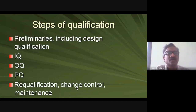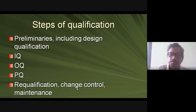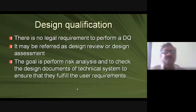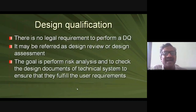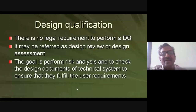DQ is the planned stage done once in a lifetime. First you do IQ, OQ, PQ, then change control for qualification maintenance throughout the equipment's lifetime. Preliminaries and Design Qualification are done only once, before purchasing equipment. In the DQ there is no mandatory legal document because it is an idea and charting-out stage, so it may not be required by guidelines.